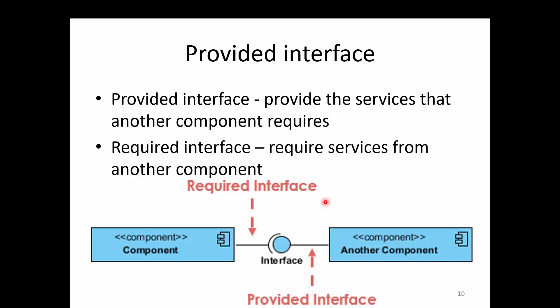Provided interfaces provide the services that another component requires, and required interfaces require service from another component. In this example we have two components: the first component is named 'component' and the second is named 'another component'. The component named 'component' has a required interface, and the component named 'another component' has a provided interface. So this component will require an interface, and that required interface will be provided by 'another component'.